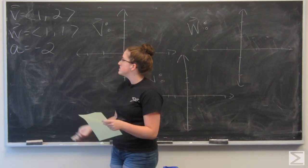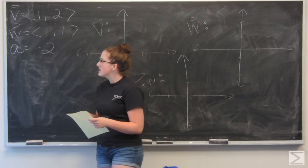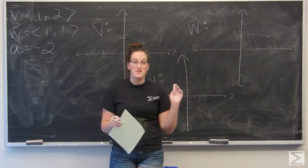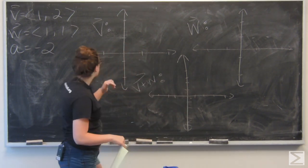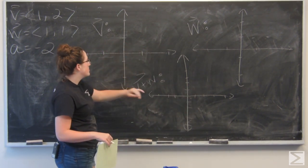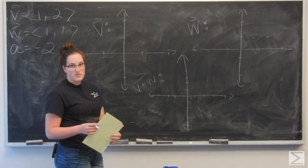For this question, I'm given two vectors, v and w, and a scalar a, and I'm asked to graph six different vectors. The first three are just v, w, and v plus w.